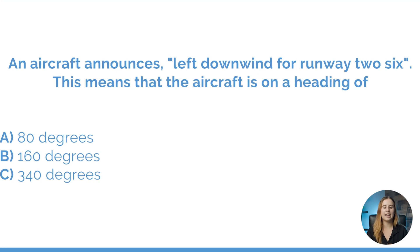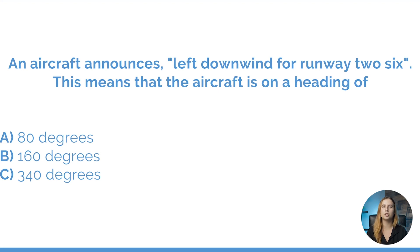Our first question asks: an aircraft announces they are left downwind for runway 26. This means that the aircraft is on a heading of — well, if the aircraft intends on landing on runway 26 and they are currently on the downwind leg, they are flying parallel to the runway in the opposite direction, which means their heading is the reciprocal of 260. We take 260, subtract 180 degrees, and we find that our aircraft is flying on a heading of 80 degrees.